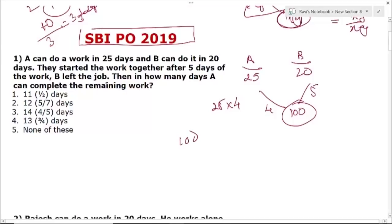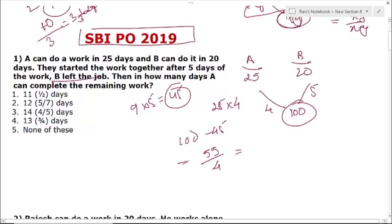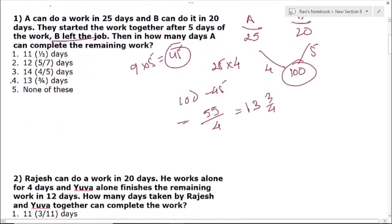They started working together. After 5 days B left the job. So together they worked for 5 days: (4 + 5) × 5 = 45 units done. Remaining work is 100 − 45 = 55. B left, so only A remains with efficiency 4. 55 ÷ 4 = 13 and 3/4 days. The answer is option 4.